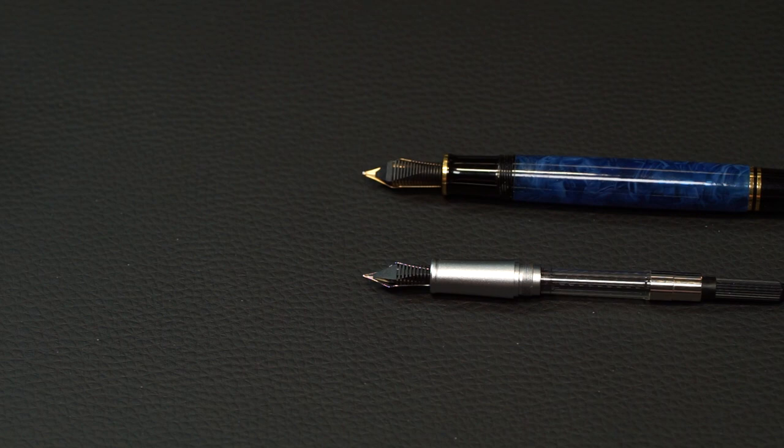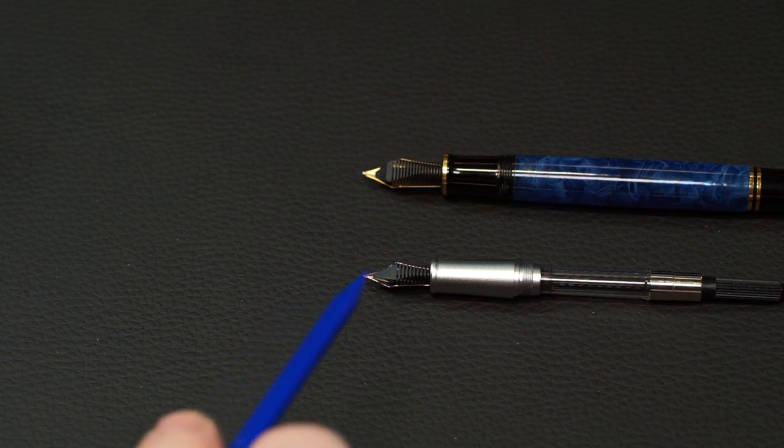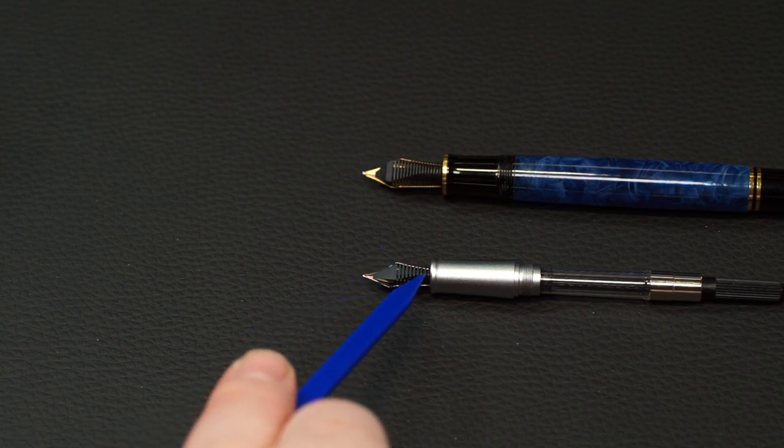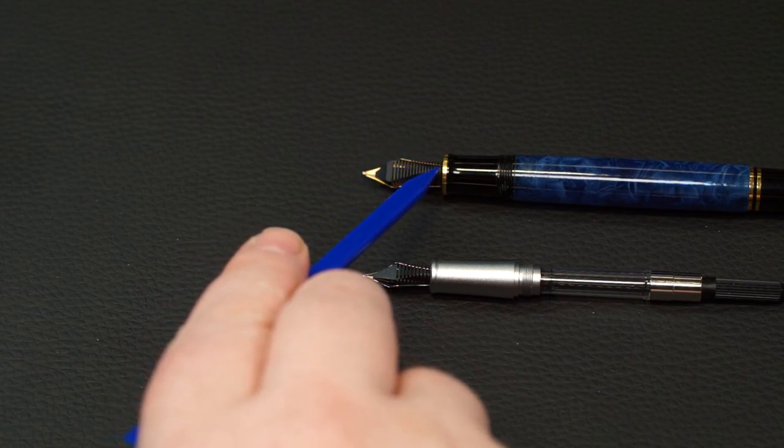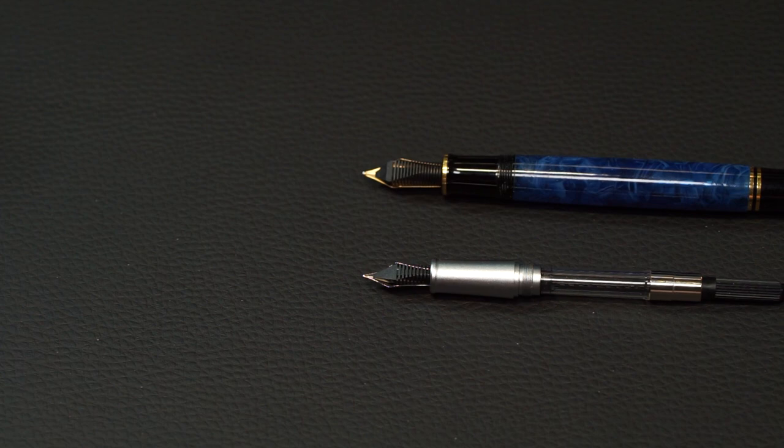The nib of the fountain pen is now dipped into the ink in the inkwell. And do this so far that the opening in the fountain pen's feet is submerged. As a safety measure, however, you can easily immerse the fountain pen so far that the beginning of the grip section is in the ink.